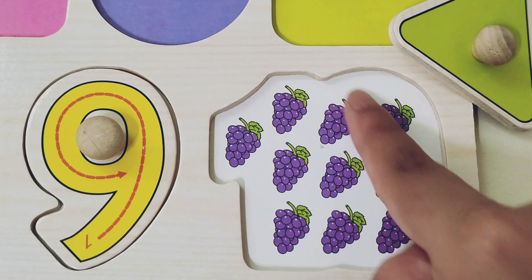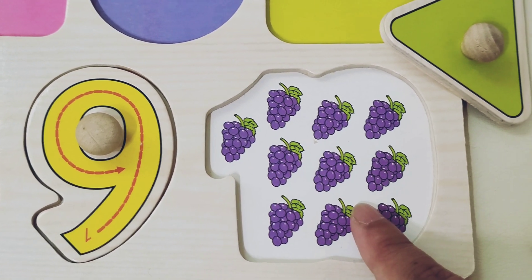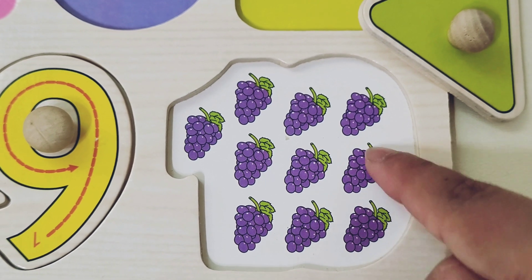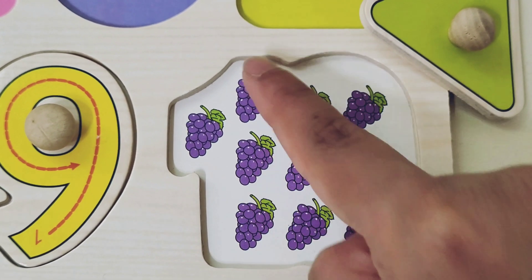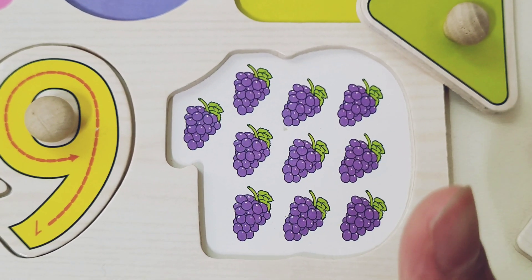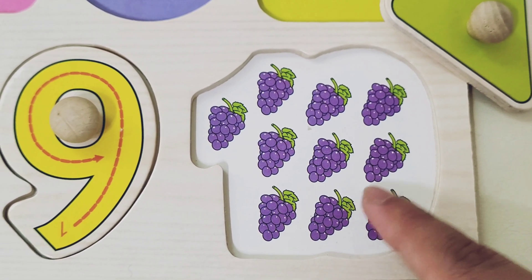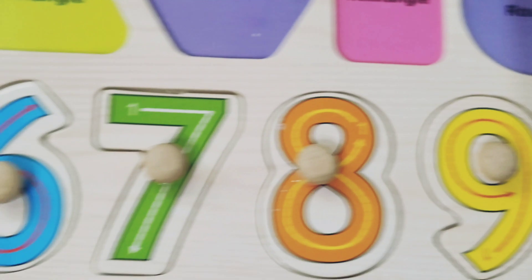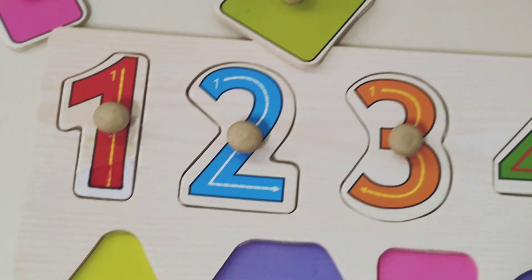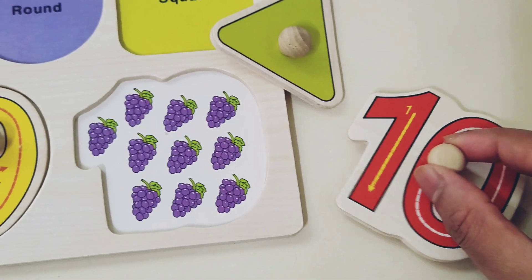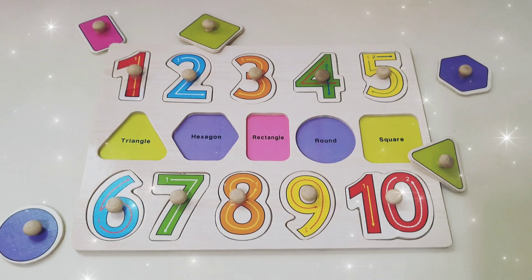And in the last block here, we have so many yummy, yummy grapes. Can you count them? 1, 2, 3, 4, 5, 6, 7, 8, 9, 10. Great job! Here we have 10 purple grapes. Let's find the number 10. Here it is. Number 10 is here. Let's go number 10. Well done, kids.